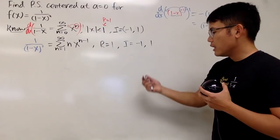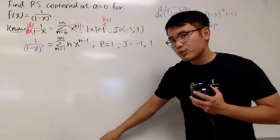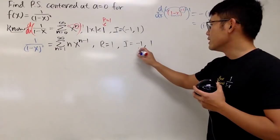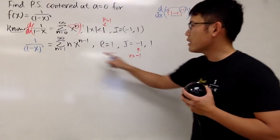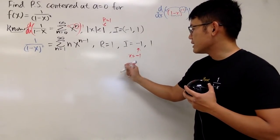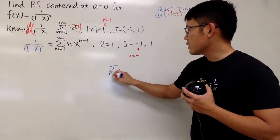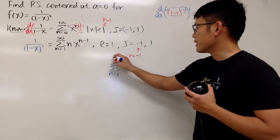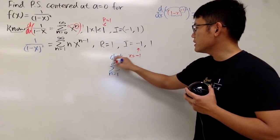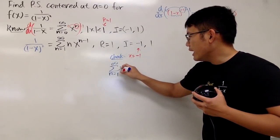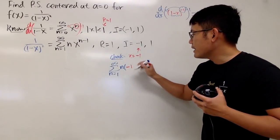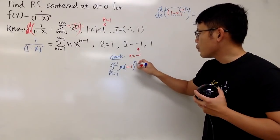Now let's do this real quick. We'll check the convergence at the endpoints. So I will check when x equals -1. We put this right here, and we will get the sum as n goes from 1 to infinity. This is just checking for the convergence at the endpoints. Put -1 into this x. We get n times (-1) raised to the (n-1) power.